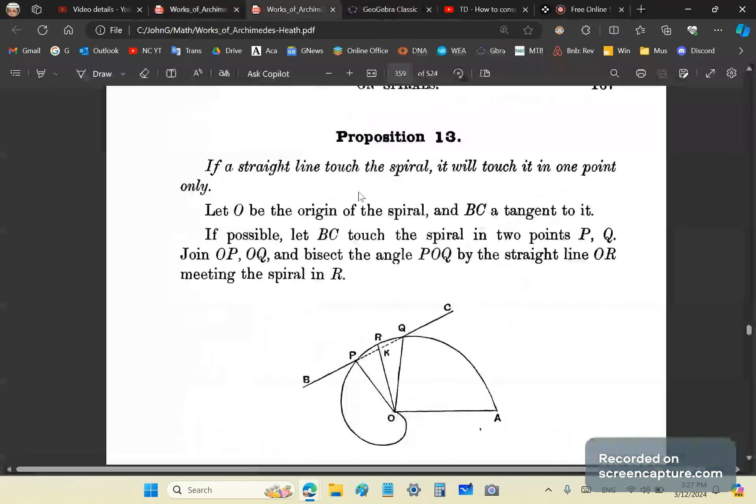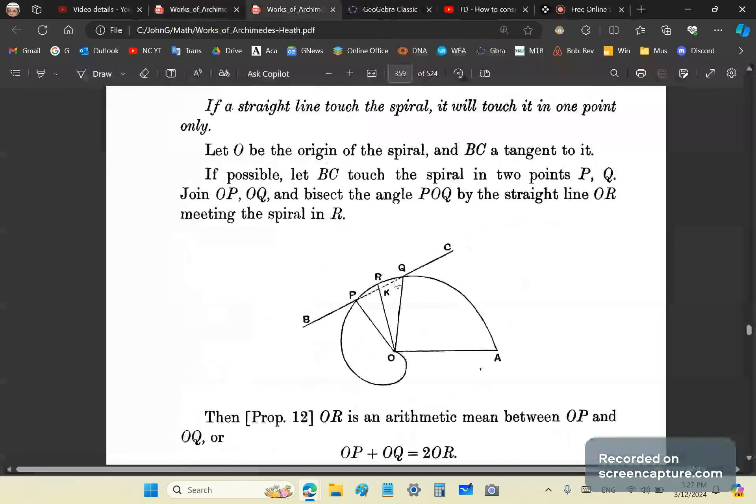There's a very interesting proposition. It says if a straight line touches the spiral, it will touch it in one point only. Let O be the origin of the spiral and BC a tangent to it. It's automatically understood that a tangent doesn't cross at two points or never crosses the curve, otherwise this proof would fail horribly. The original assumption here is that a tangent only touches the curve.